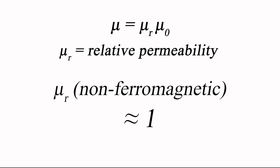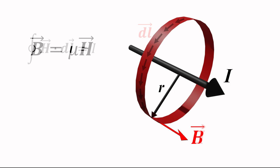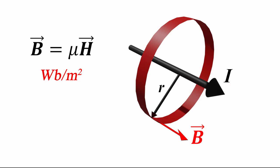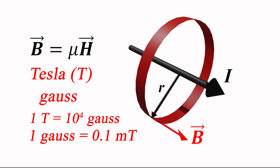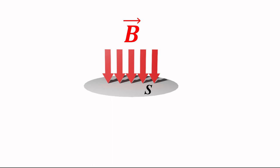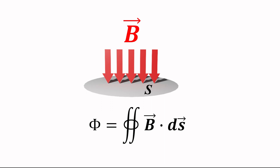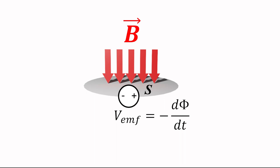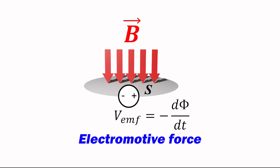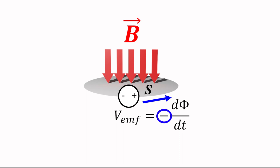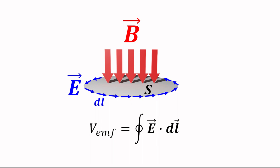Going back to Ampere's law and the magnetic field intensity H resulting from a current, we multiply H by the permeability to get the magnetic flux density B expressed in units of Webers per square meter, or Tesla. It is also sometimes expressed in gauss, where 1 Tesla equals 10,000 gauss, or 1 gauss equals 0.1 millitesla. The total magnetic flux through a closed surface, designated by the Greek letter phi, equals the integral of the flux density over that surface. The negative time rate of change of that flux will produce a potential — also known as an electromotive force, or EMF — in the contour enclosing the surface. The significance of the negative sign is that the induced EMF will oppose or impede the incident magnetic flux. This principle is known as Lenz's law. The induced EMF can be written as the line integral of the electric field along the contour, giving us the full expression of Faraday's law of electromagnetic induction.